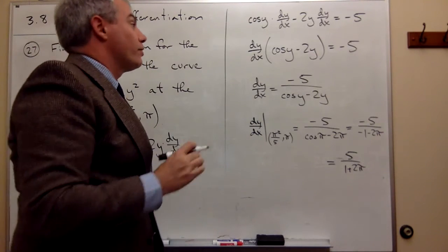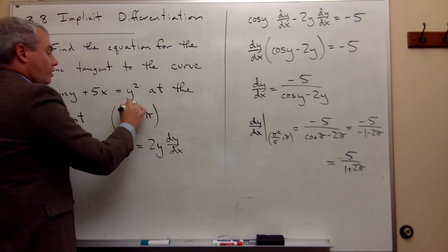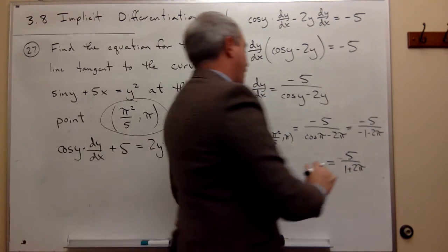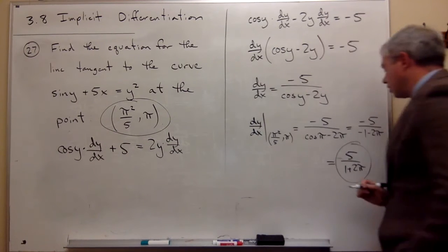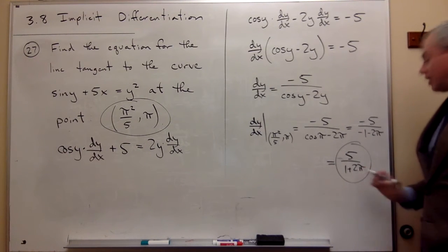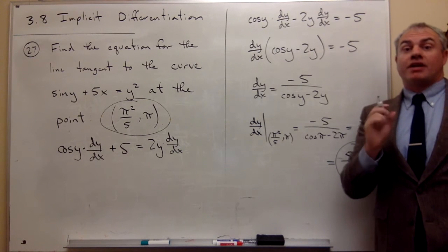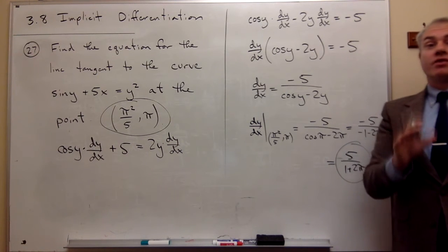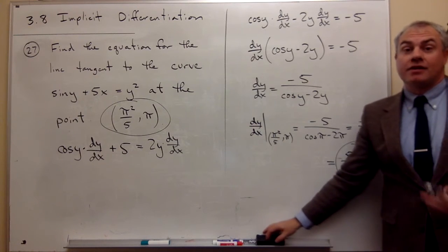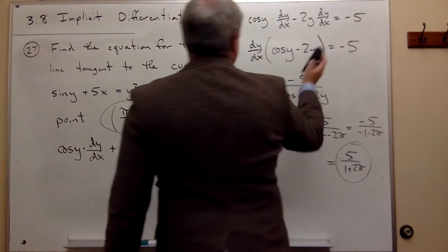Now that we know the slope is 5 over 1 plus 2pi, and we have the point (π²/5, π), I can use the point-slope equation of a line to find the equation of the tangent line.